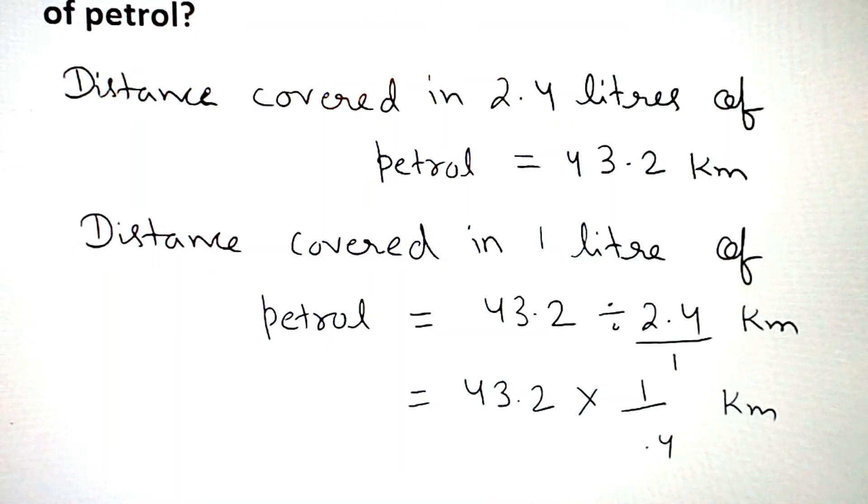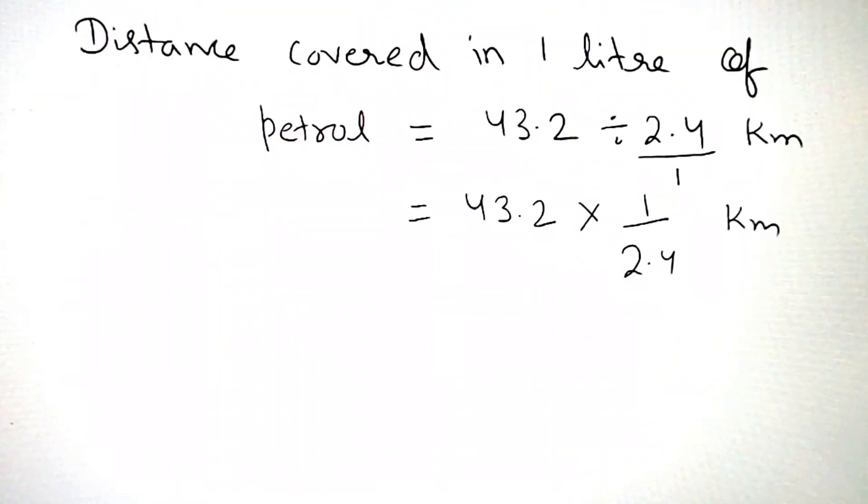After this, we'll solve. It's 43.2. We'll remove the point - there's one digit after the decimal, so we add one zero, which means it becomes ten in the denominator. Similarly, 2.4...